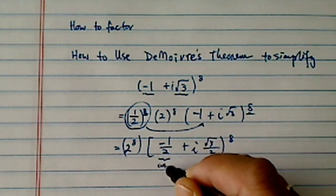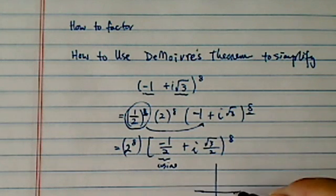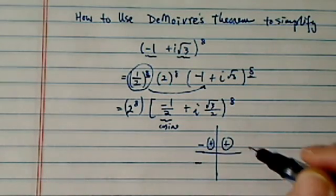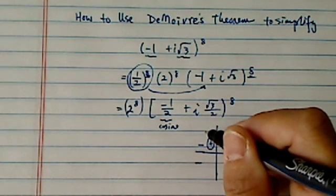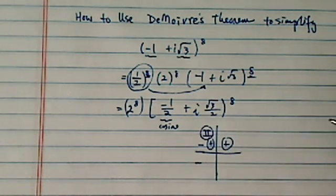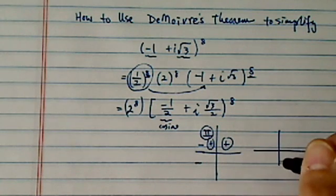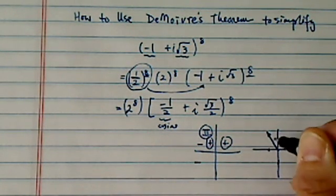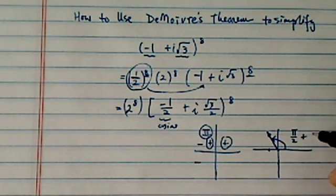The first term is a cosine function. Cosine is negative in quadrant 2 and 3. Sine is positive in quadrant 1 and 2. Okay, so obviously I have a quadrant 2 angle here. Cosine is negative in quadrant 2 and 3. So my angle is pi over 2 plus a 30 degrees which is pi over 6.